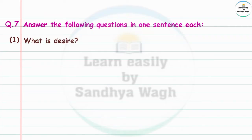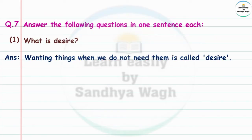Question 7: Answer the following questions in one sentence each. One: What is desire? Answer: Wanting things when we do not need them is called desire. When we do not have a need for something but still want it, that is called desire.